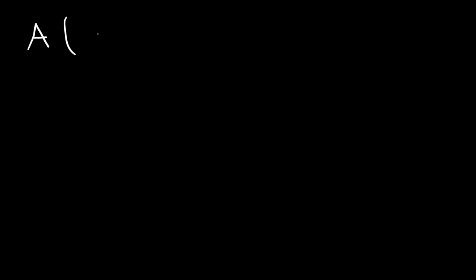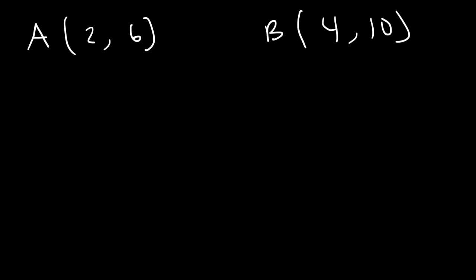In this video, we're going to focus on finding the midpoint between two points. Let's say we have point A, which is (2, 6), and point B, which is (4, 10). What is the midpoint between these two points? To find the x-coordinate, all you need to do is average the two x-values. Here's the formula: it's x1 plus x2 divided by 2.